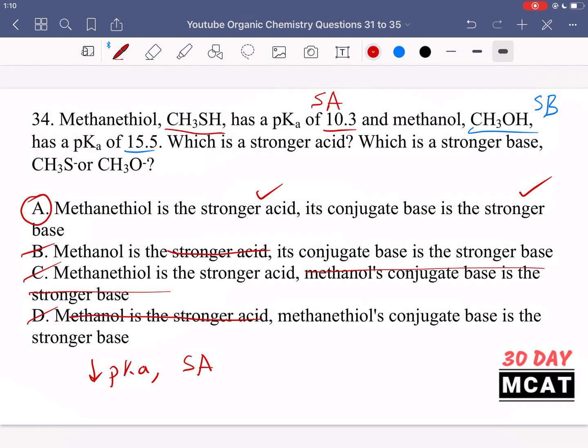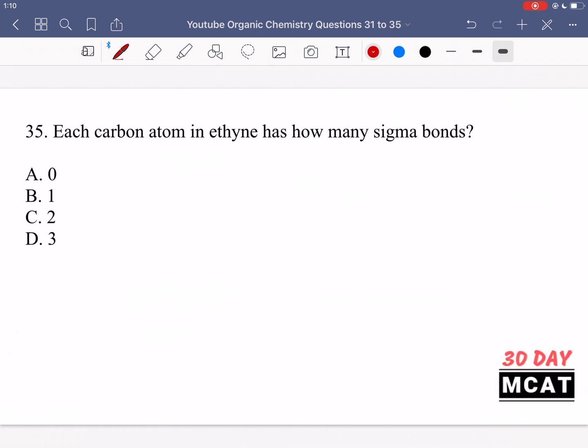Moving on to question 35, it says each carbon in ethyne has how many sigma bonds. Ethyne looks like this. Eth tells us there are two carbons, and the yne part tells us there is a triple bond.